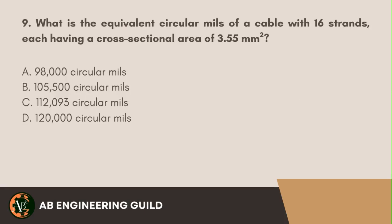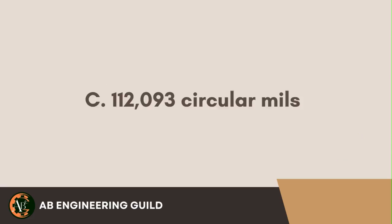Question 9. What is the equivalent circular mills of a cable with 16 strands, each having a cross-sectional area of 3.55 mm²? A. 98,000 circular mills. B. 105,500 circular mills. C. 112,093 circular mills. D. 120,000 circular mills. Answer: C. 112,093 circular mills.